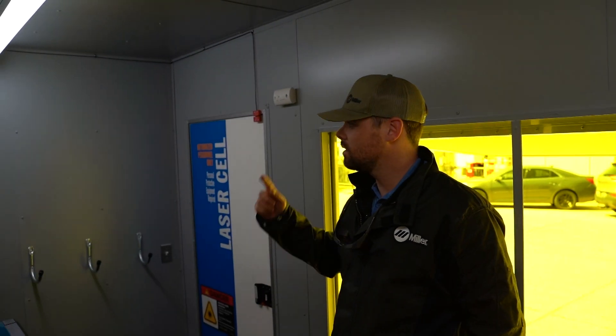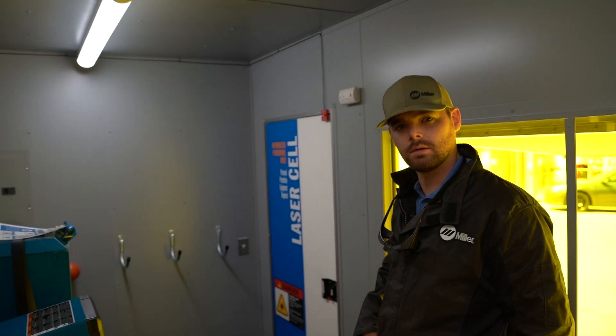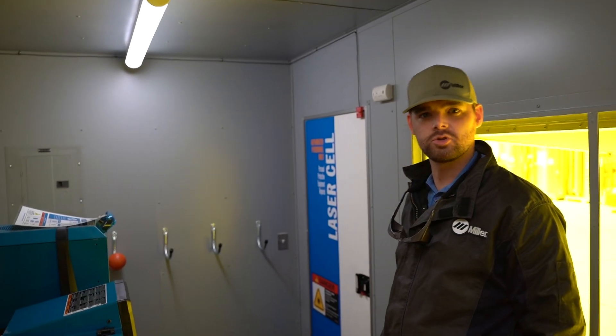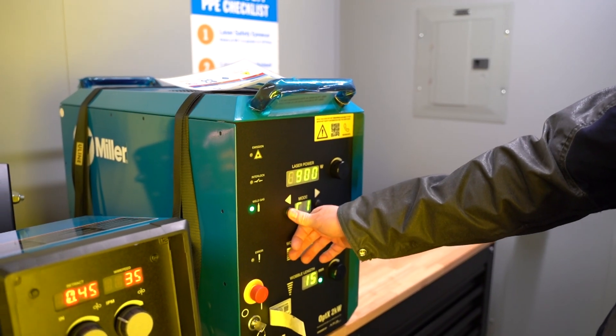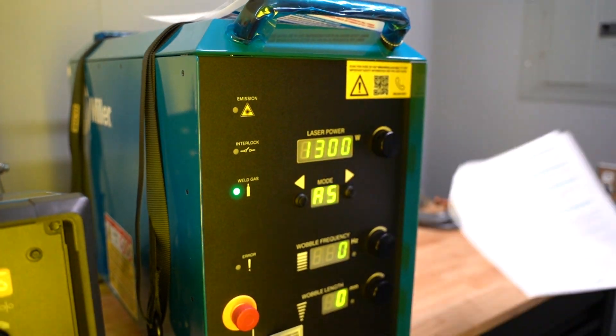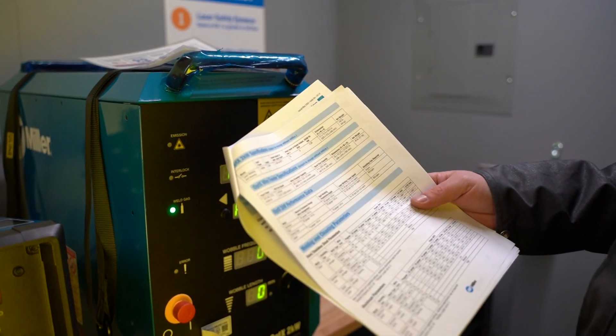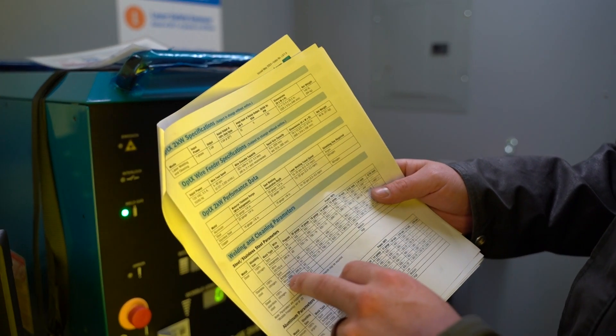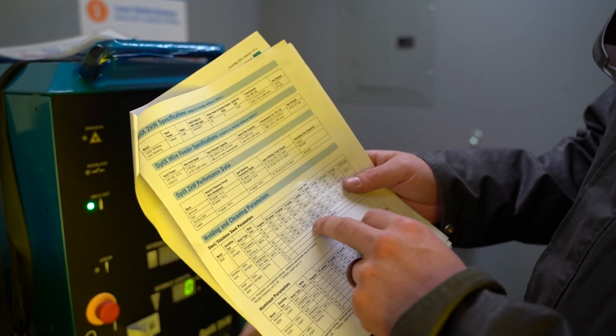Right here we have our brand new laser demo trailer. We're inside our light-tight, laser-safe booth, which is our trailer. This is where you're going to set your parameters. We really work off of our parameter chart here. So if you're welding, say, stainless steel with wire, 16 gauge, we're going to be on A2.